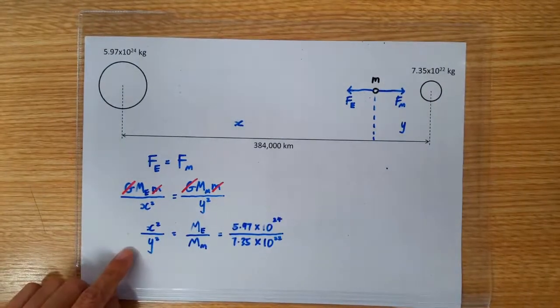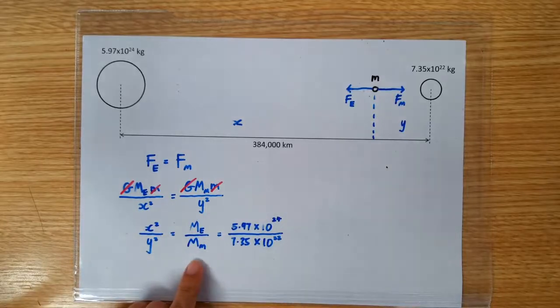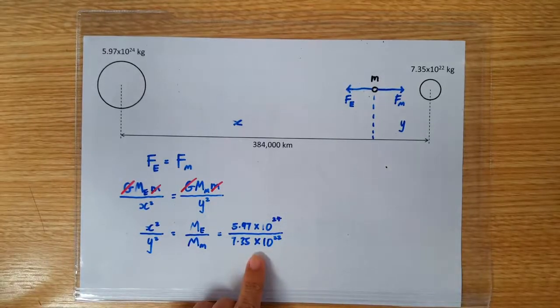With a little bit of manipulation, you can write x squared over y squared as the ratio of the masses and you can then substitute in the values.